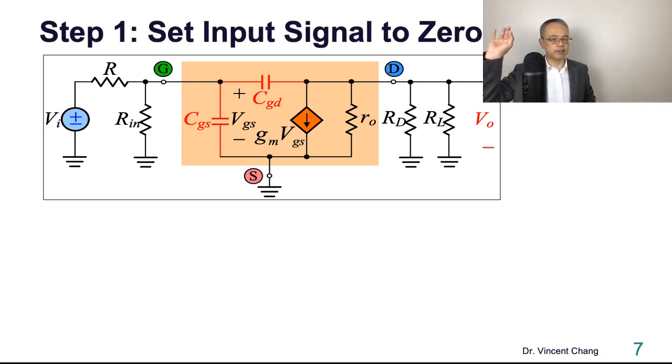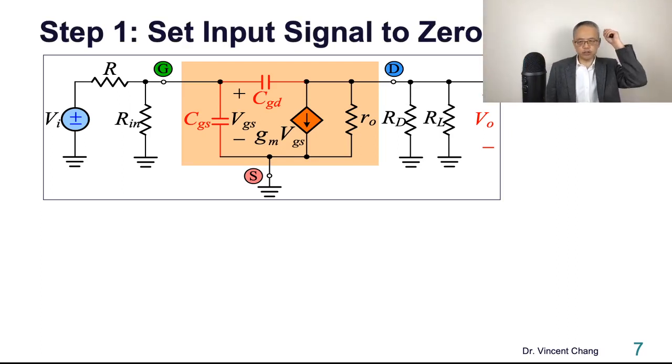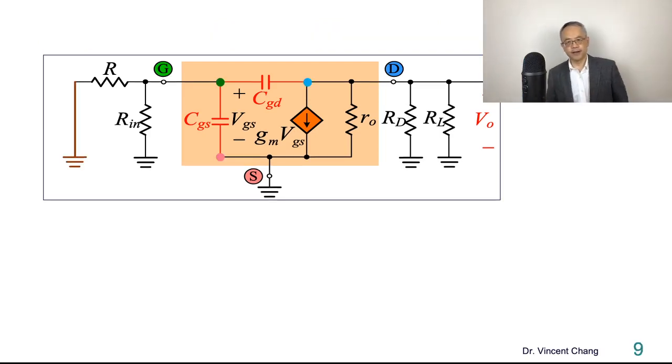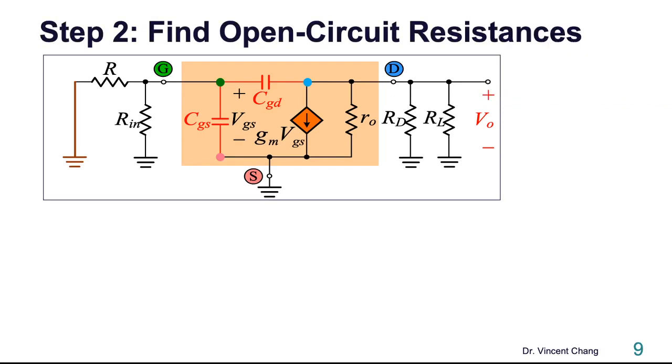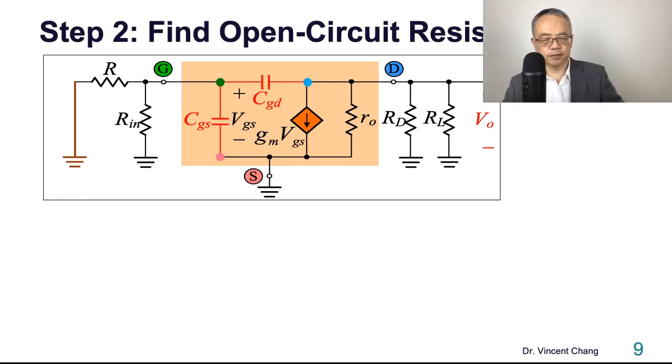So now this is the high frequency equivalent circuit. So first step, set the input signal to zero. So it's simply short circuit the VI. And step two, you find all the open circuit resistances. So how many resistances you are going to find? Two: R1O and R2O.